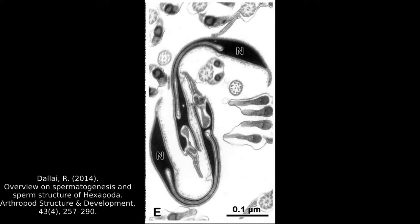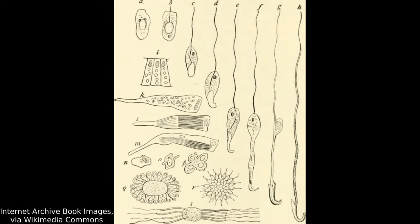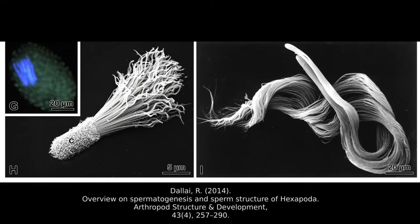An insect sperm has the same basic structure as that of mammals — a head which contains the nucleus and other organelles, and a flagellum which allows the sperm to swim to its destination. While they share the same basic plan, some insect sperm have much more hooked linear heads compared to most mammals, although they do look quite similar to rat sperm. Their size can vary immensely from species to species. One species of Drosophila, a type of fruit fly, has been reported to have sperm nearly six centimetres long, although they rarely exceed a width of 0.7 micrometres.